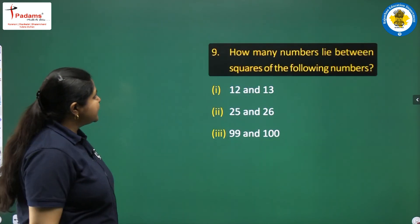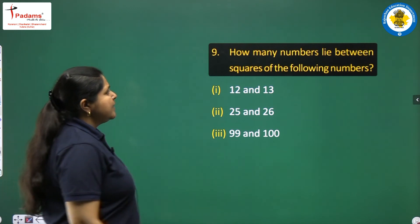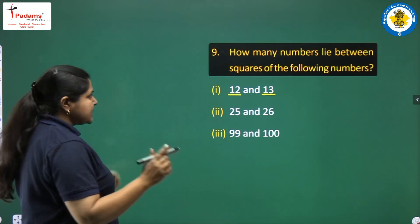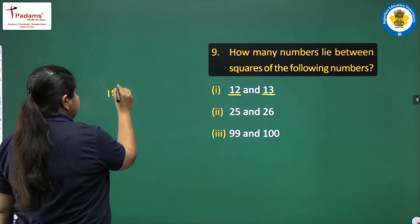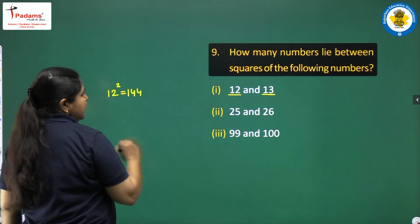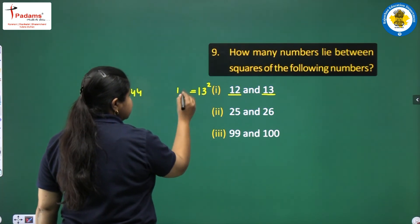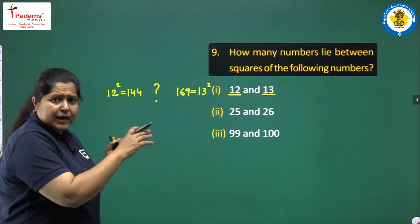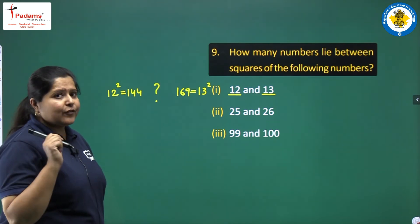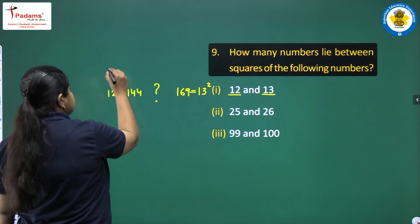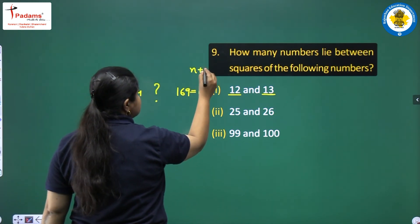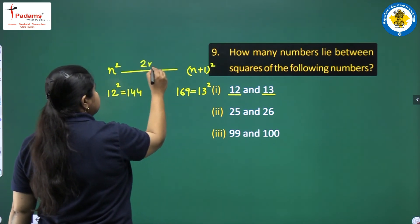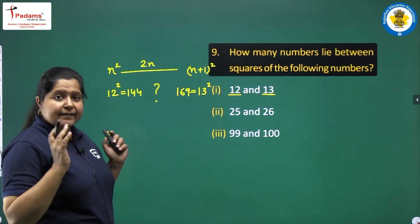The last question: how many numbers lie between squares of the following numbers? Between 12 squared and 13 squared, how many numbers are there? 12 squared is 144 and 13 squared is 169. Instead of counting, there is a short formula: between n squared and (n+1) squared, there are 2n non-square numbers.